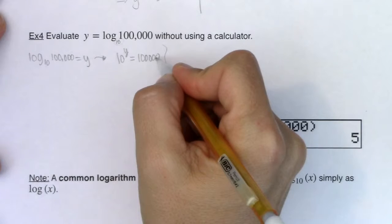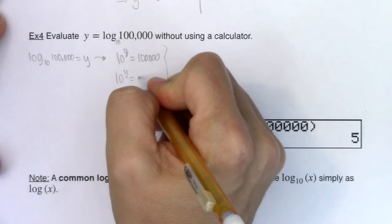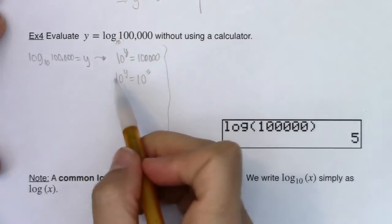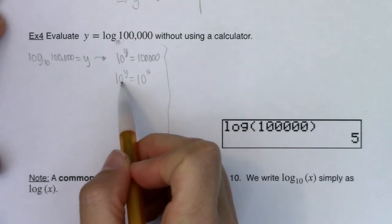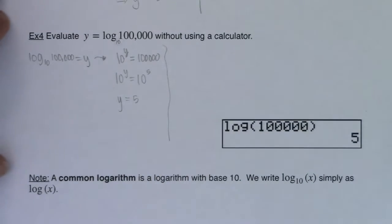And then because there are five zeros here, one, two, three, four, five, we know 10 to the y is equal to 10 to the fifth. And because these two powers are equal and their bases are the same, we know their exponents must be the same as well. So I can get to y is equal to 5.